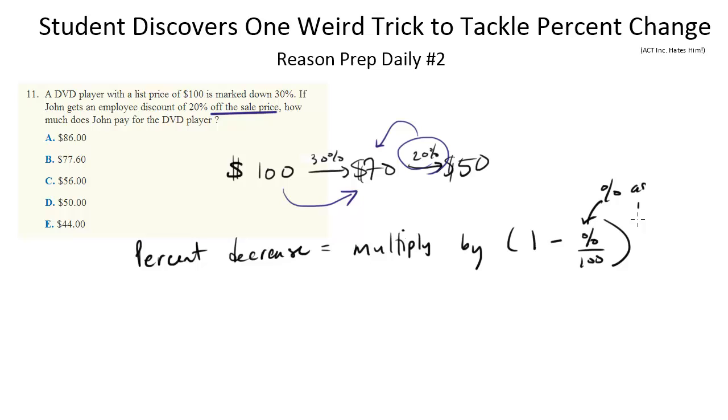You could do this in your head with $100, but if the number were harder it would be more challenging to do this in your head. Let's just do it the long way anyway. We're gonna multiply our $100 times (1 - 30/100), which is 0.3.